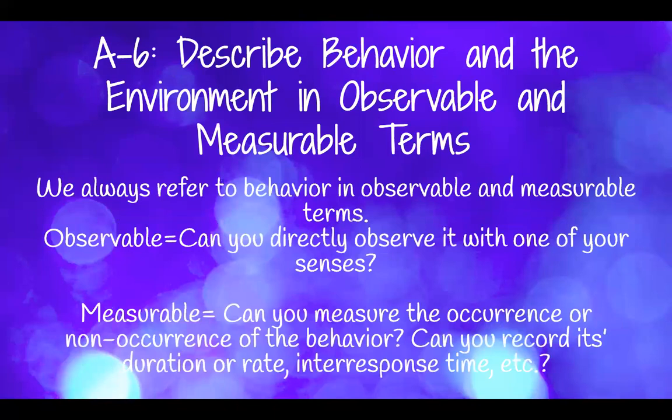A-6: describe behavior and environment in observable and measurable terms. You always want to refer to behavior in observable and measurable terms to make sure it's clear for everyone you're communicating with. Observable means: can you directly observe it with one of your senses? Can you see, hear, or feel the behavior occurring? Consider whether you are making assumptions or actually observing the direct behavior. Measurable means: can you measure the occurrence or non-occurrence of the behavior — its duration, rate, inter-response time, or latency? You want to use both observable and measurable terms when communicating with colleagues and writing session notes.